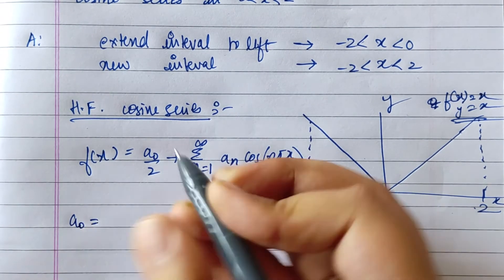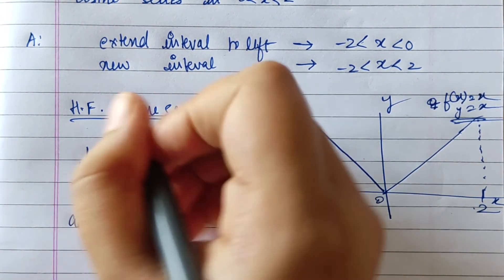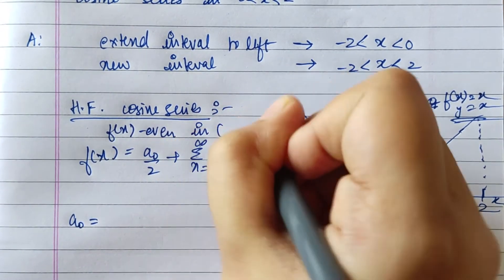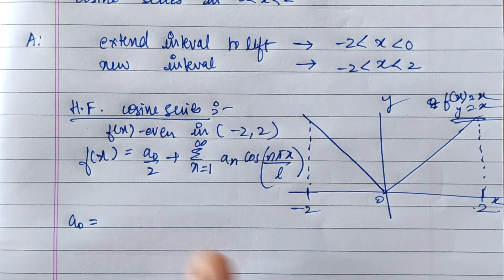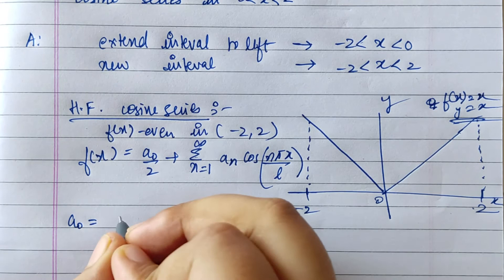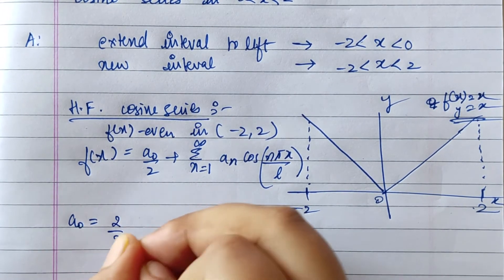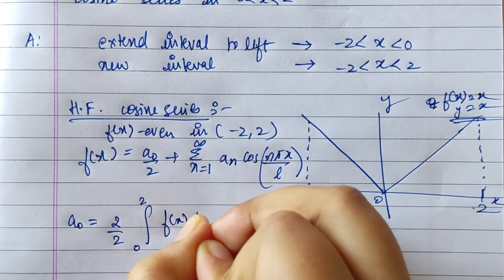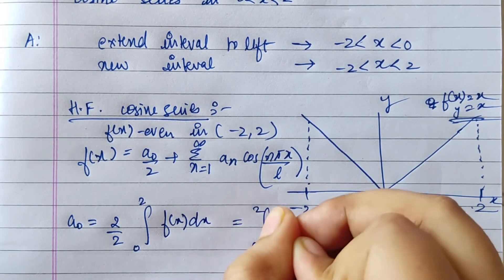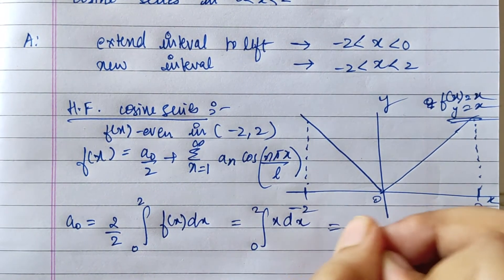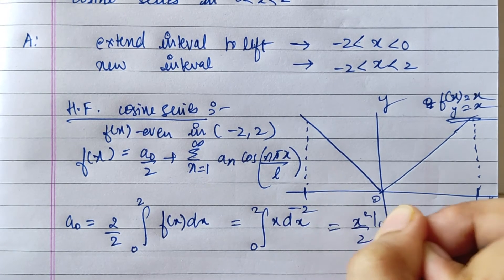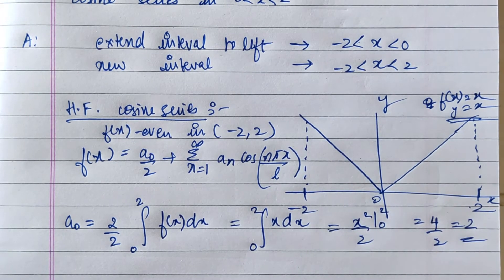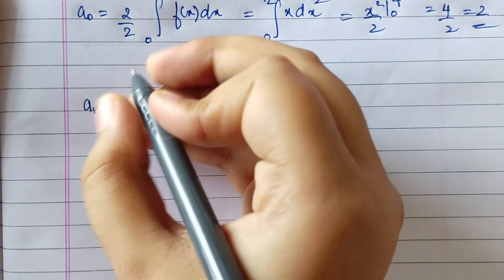We use this when the function f(x) has to be even in the interval minus 2 to 2, then it becomes a cosine series. a0 is equal to 2 by 2 times the integral from 0 to 2 of f(x) dx, that is the integral from 0 to 2 of x dx. Integrating gives x squared by 2 from 0 to 2, which is 4 by 2, that is 2.